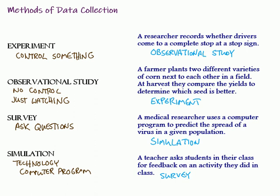Several different methods of data collection: an experiment, observational study, survey, and simulation. Experiment and observational study are kind of similar — the big difference is whether there's control or not. In an experiment, we're in control of something. In an observational study, we do not control — we're just watching. A big case when observational studies come into play is when it would be unethical or something you can't control. A survey is where we're asking questions. In a simulation, we use technology to maybe run something faster than we could just watching it in real time, and that allows us to make predictions like weather forecasts.